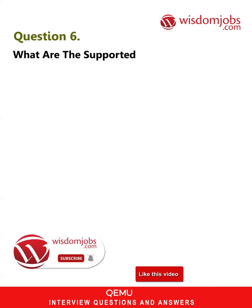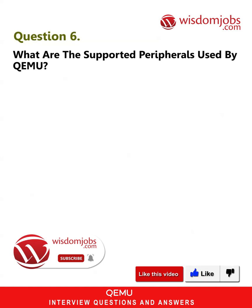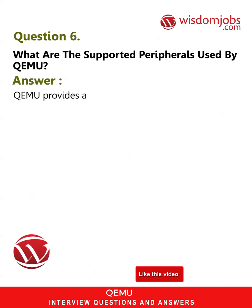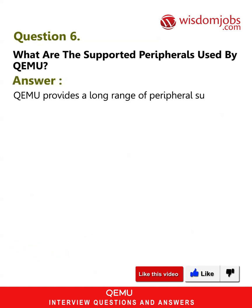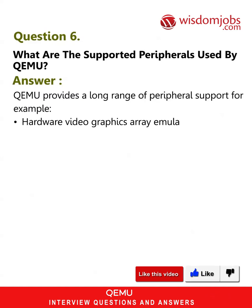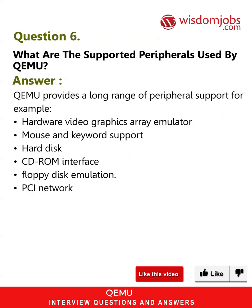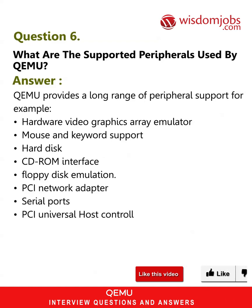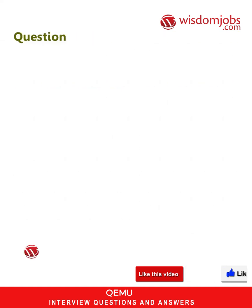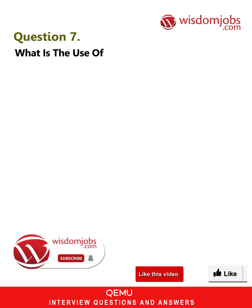Question 6: What are the supported peripherals used by QEMU? Answer: QEMU provides a long range of peripheral support, for example: hardware video graphics array (VGA) emulator, mouse and keyboard support, hard disk, CD-ROM interface, floppy disk emulation, PCI network adapter, serial ports, and PCI universal host controller interface.